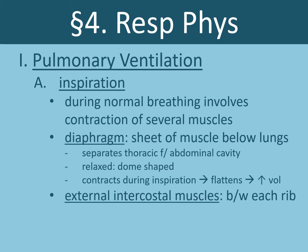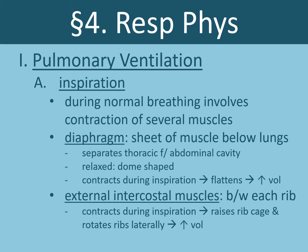In addition to the diaphragm, the external intercostal muscles, which are found between each rib, also contract during inspiration. This causes the rib cage to raise and also causes the ribs to rotate laterally. Both of those processes also lead to an increase in the volume of the thoracic cavity. Increasing the volume of the thoracic cavity increases the volume of our lungs, decreases the air pressure in our lungs, and causes air from the atmosphere to flow into the lungs.